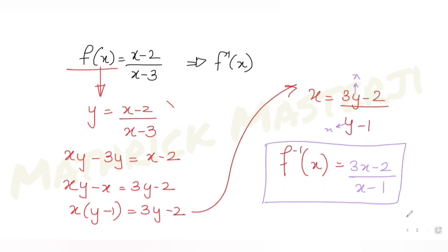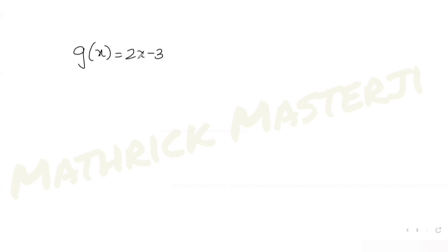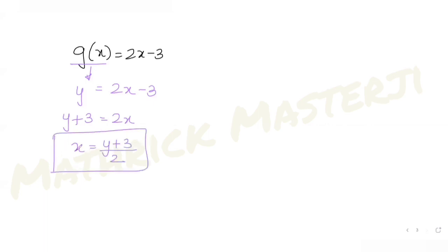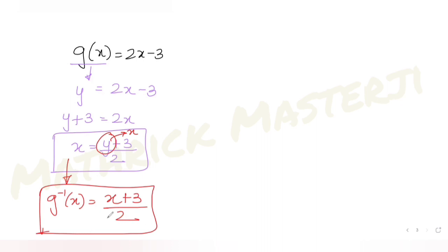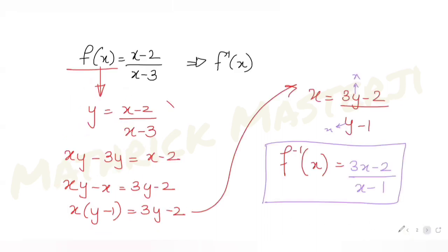Now let's find g inverse of x. g(x) is given as 2x minus 3, so putting g(x) equal to y: y equals 2x minus 3, giving y plus 3 equals 2x, so x equals (y plus 3) divided by 2. Resubstituting y as x, we get g inverse of x equals (x plus 3) divided by 2.